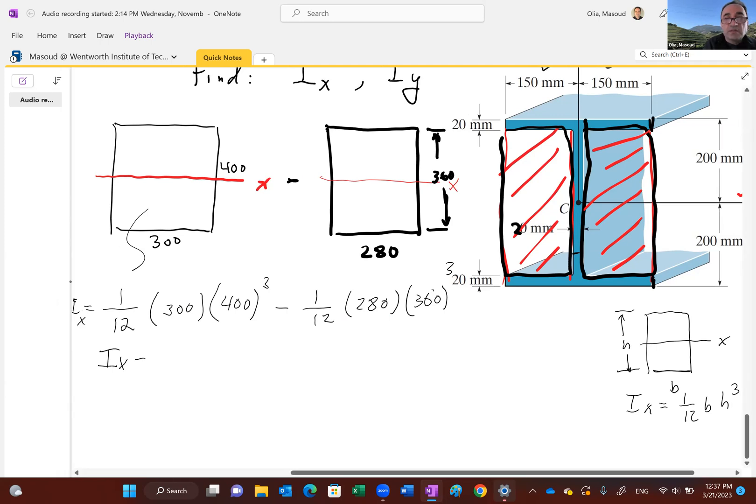So let me give you the answer. I sub x comes out to be 511 times 10 to the 6 millimeters to power 4. If you want to convert it to meters to power 4 for the sake of calculating bending stresses in the equation, sigma equals mc over I. Remember, the I in the denominator in this flexure formula is the I that you're calculating, as long as your moment is about x-axis. So this is m sub x, and this is I sub x.